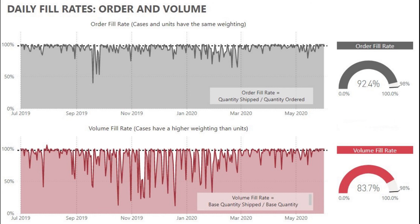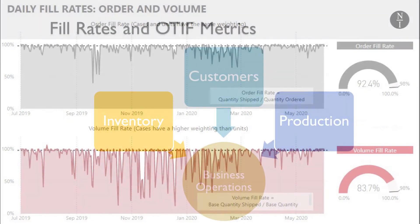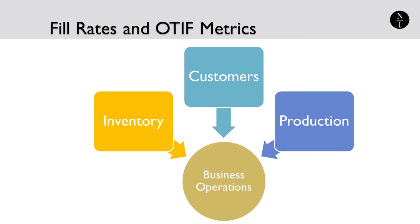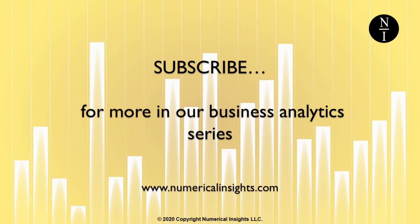The values you choose for your target levels will depend on your product offerings and the current performance levels of your business operations. Fill rates and OTIF metrics can tell you a great deal about the performance of business operations. While viewed as inventory metrics, their application extends beyond inventory into the areas of customer satisfaction and production. Skillful segmentation of these metrics can provide valuable insights into operational issues and help determine the root cause of performance issues.